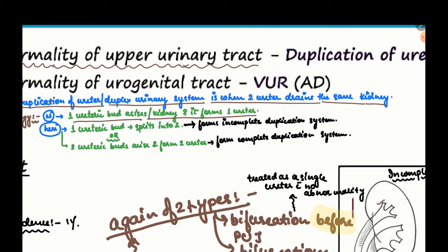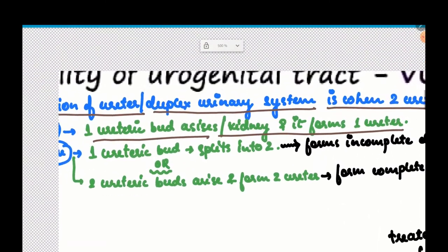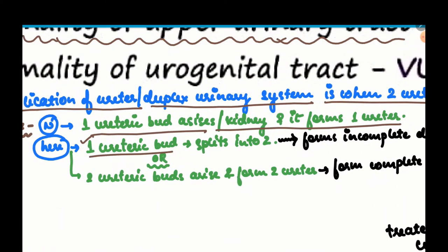In duplication of the ureter there are 2 types of anomalies. One: one ureteric bud arises and splits into 2, resulting in the formation of 2 renal pelvises. Two: 2 ureteric buds arise and form 2 ureters, resulting in 2 separate ureters draining 2 parts of the kidney.